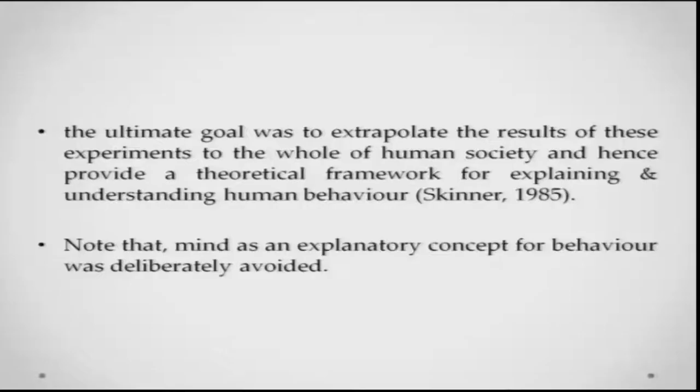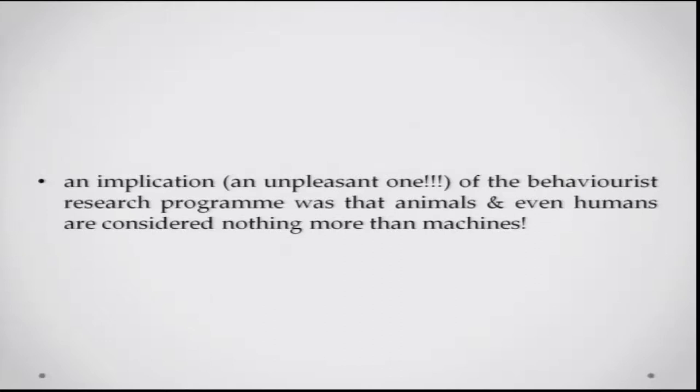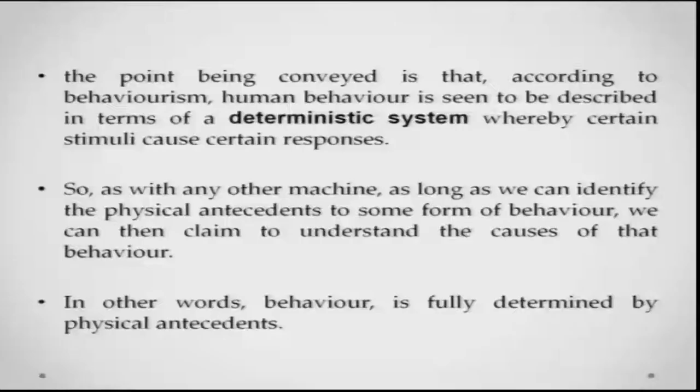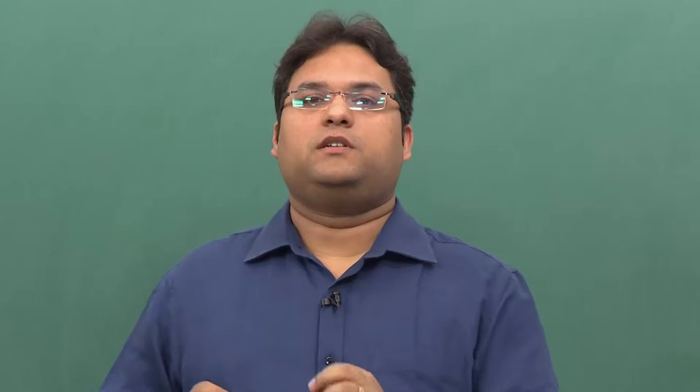The ultimate goal was to extrapolate the results of these animal experiments to the whole of human society and hence provide a theoretical framework for explaining and understanding human behavior. If you remember in the history class, Skinner's idea was that if you give me a set of individuals and the right conditions to raise them, I can make them turn out to be whatever you ask — lawyers, artists, actors, whatever. This is the kind of confidence they had in this theoretical framework. Note, however, that in this explanatory concept for behavior, mind has not been used — they are not really talking about mind at all. An implication of this whole exercise could be that animals and even humans are considered nothing more than machines.